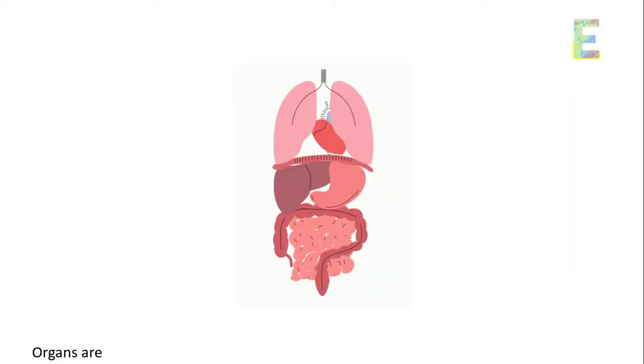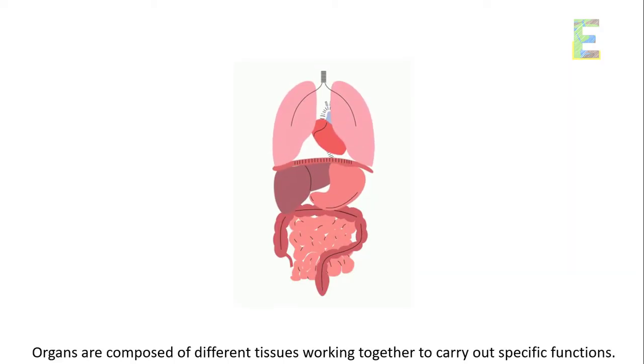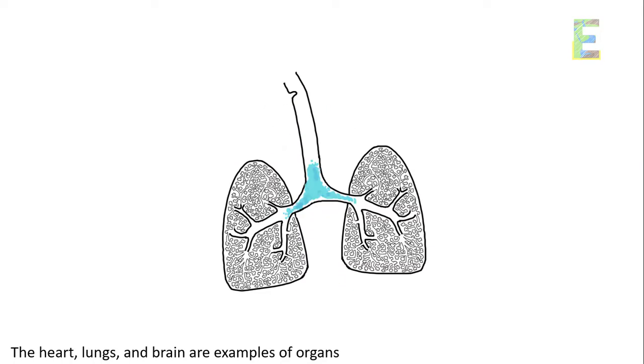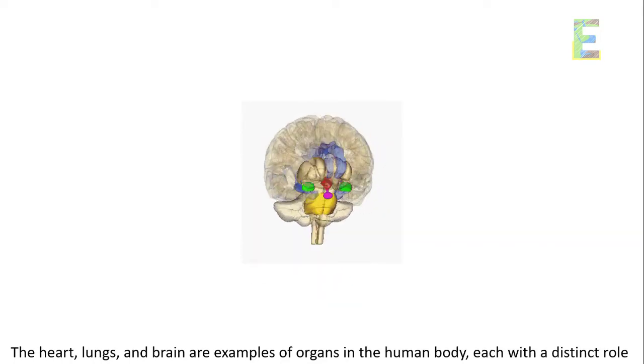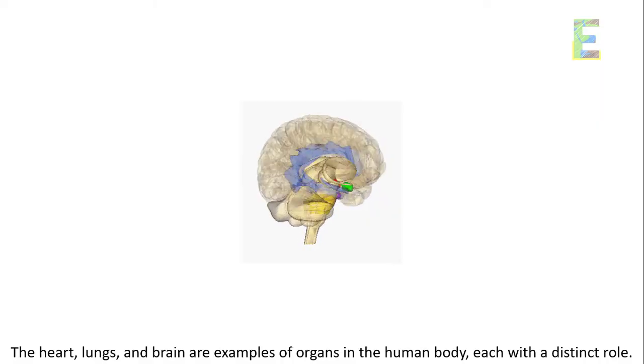The organ level. Organs are composed of different tissues working together to carry out specific functions. The heart, lungs, and brain are examples of organs in the human body, each with a distinct role.